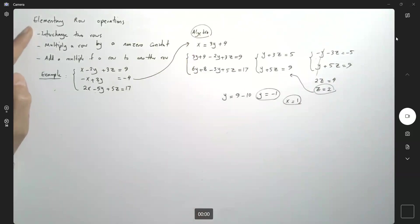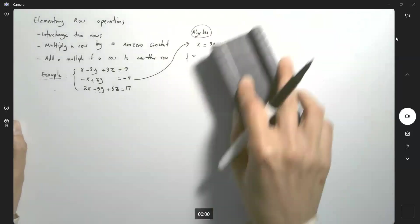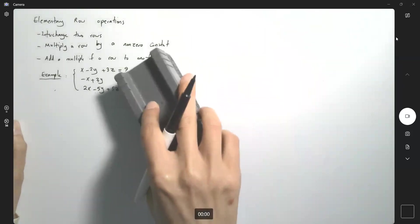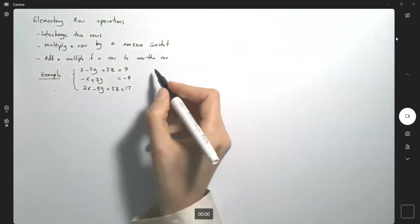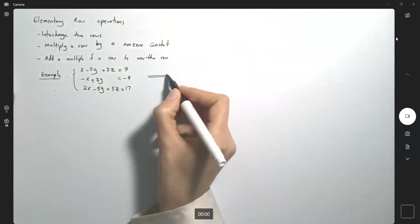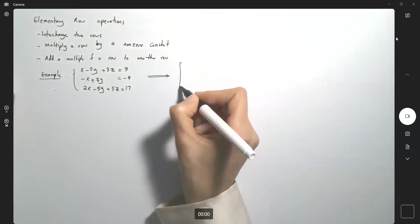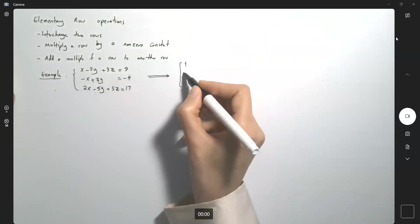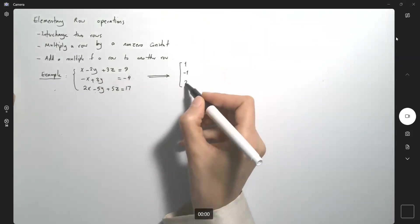But in using elementary row operations, we are interested in applying the method that we just learned. So first we are going to form the augmented matrix. The augmented matrix can be written as the coefficient of x, 1, negative 1 and 2.